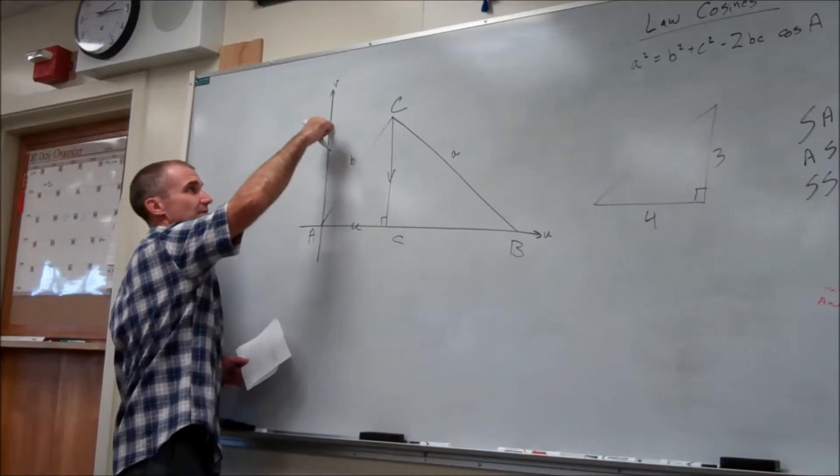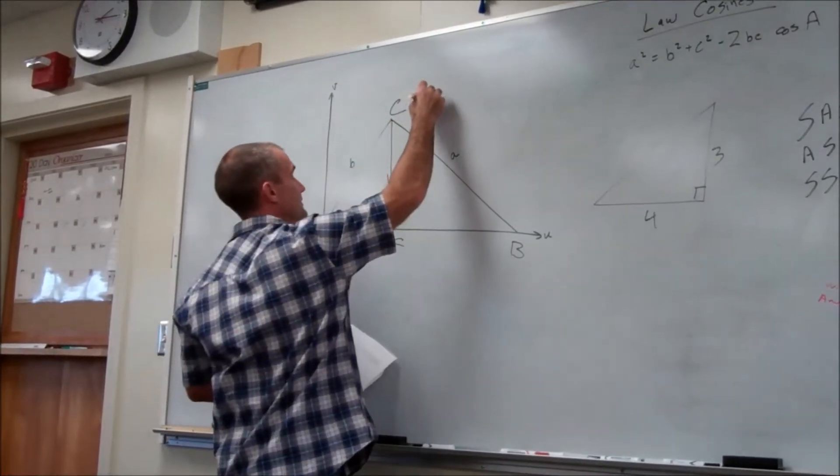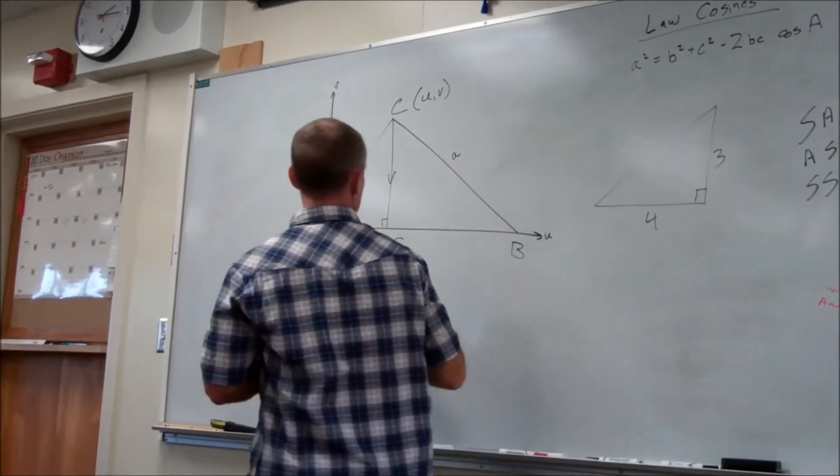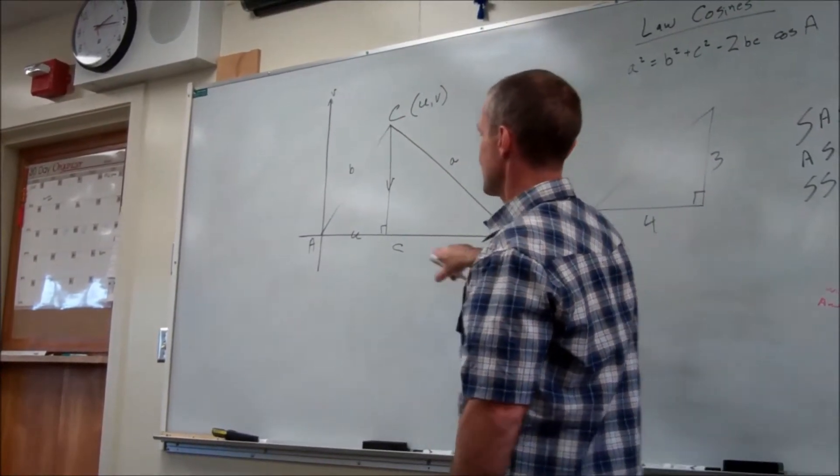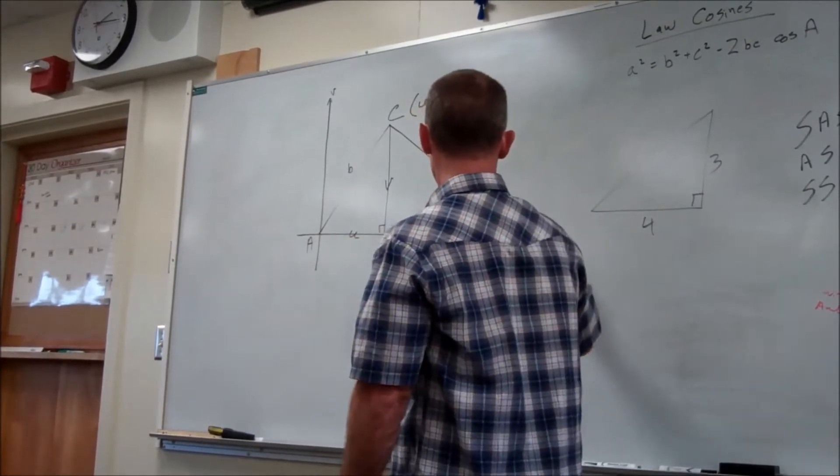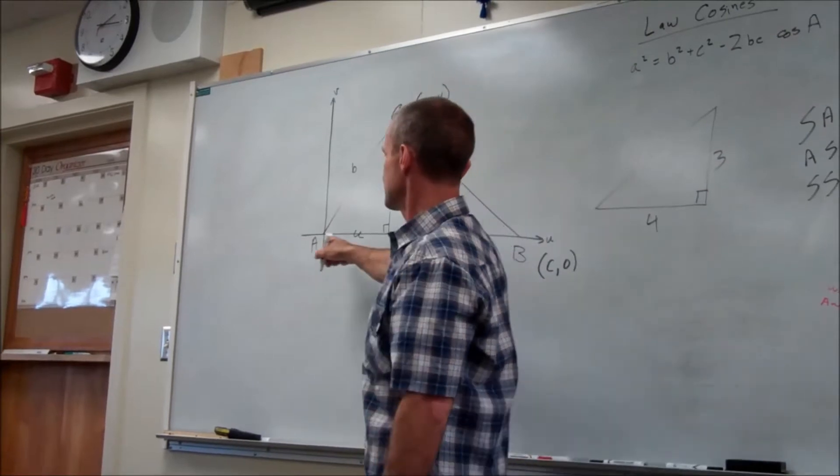Over u, up v on my v axis, and the coordinates of this point right here would be u, v. The coordinates of this point right here is I will go over c units and up 0 units. This coordinate is 0, 0.